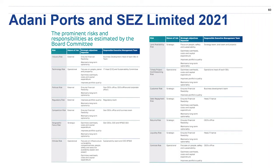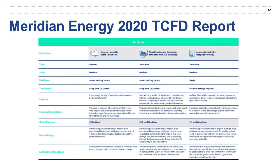Something that you might have found was missing is the time horizons of that risk. This was a recommendation from the TCFD. And if you look at our next slide, Meridian Energy, which we've discussed before, provides a nice example of how they give their time horizons.